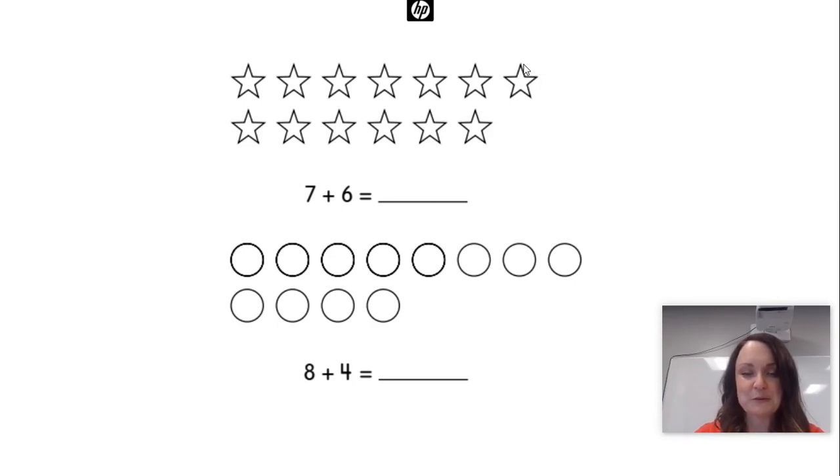You know what else you could do if you were really thinking? You could say oh if I put one more that would be a double. You could say I know the doubles there. Seven and seven is fourteen. Very good. Take away one, thirteen. Awesome.